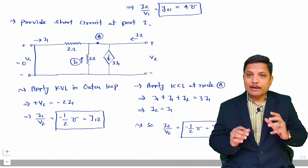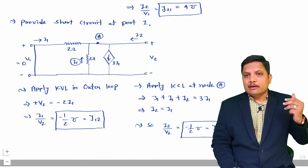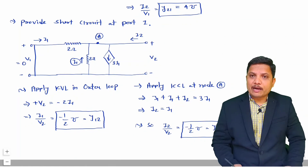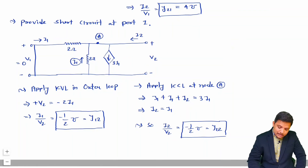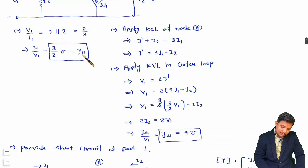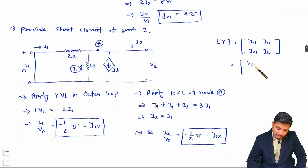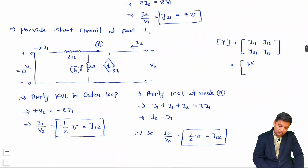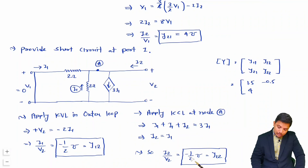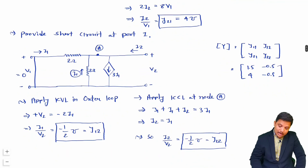That is how we identify Y parameters. For an MCQ examination, we can write the Y parameter matrix as [Y11, Y12; Y21, Y22]. The values we solved are: Y11 = 3/2 = 1.5 mho, Y12 = −1/2 = −0.5 mho, Y21 = 4 mho, and Y22 = −1/2 = −0.5 mho. That is the complete Y matrix.